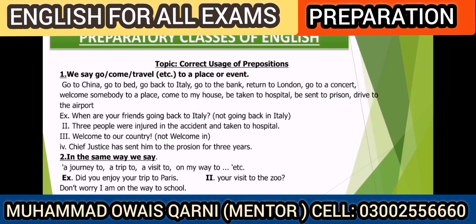Let's look at more examples to make the concept clearer. 'When are your friends going back to Italy?' — here, going back toward a place means we use 'to'; we cannot use 'in' here. 'When are your friends going back in Italy' is incorrect. Second example: 'Three people were injured in the accident and taken to the hospital.' With 'taken,' we use the preposition 'to.' Also: 'Welcome to our country,' 'welcome to our party,' 'welcome to our institute,' 'welcome to our class' — with 'welcome,' we always use 'to.'